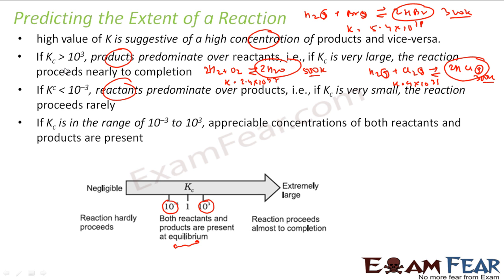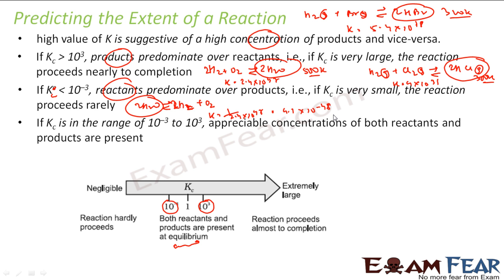Now let's take an example where Kc is less than 10⁻³. If you reverse the reaction — for example, 2H₂O breaking to form hydrogen and oxygen — at the same temperature, K will be 1 divided by 2.4×10⁴⁷, which equals approximately 4.1×10⁻⁴⁸. This very small value means very few water molecules will break to form hydrogen and oxygen gas. So: if K is very small, reactants predominate; if K is very large, products predominate.